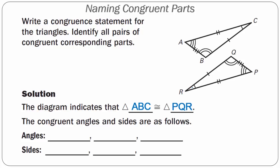Now let's look at congruent angles and sides. Angles are easy. Angle A is in the first position of triangle ABC, so it is congruent to angle P, which is also in the first position of triangle PQR. Angle B is in the second position, so angle B is congruent to angle Q. Angle C is in the third position of triangle ABC, so angle C is congruent to angle R, which is also in the third position of triangle PQR.